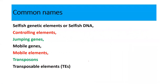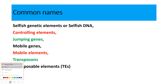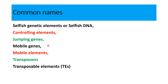There are several names for these elements. These include selfish genetic elements, controlling elements, jumping genes, mobile elements, transposons, or even transposable elements. We shall mostly use the name transposable elements.